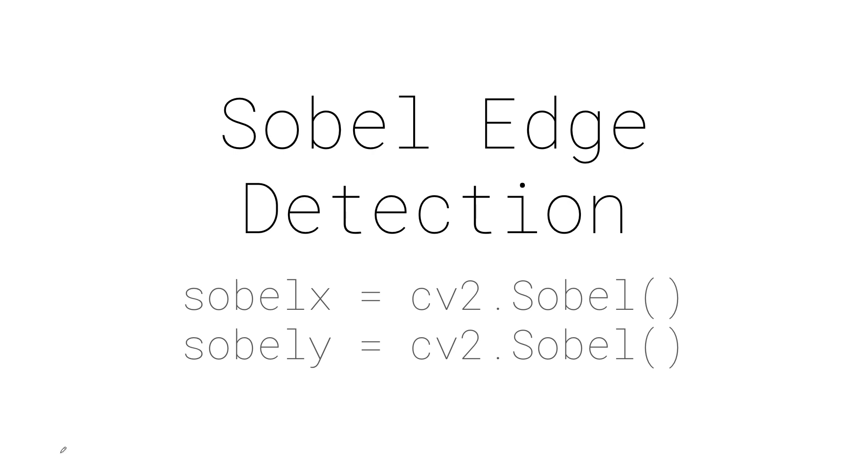Hello everybody, let us look in this video at what Sobel Edge Detection is. Sobel Edge Detection uses two types of gradients in the x-direction and y-direction. Thus, CV2.Sobel is used twice for Sobel X and Sobel Y.